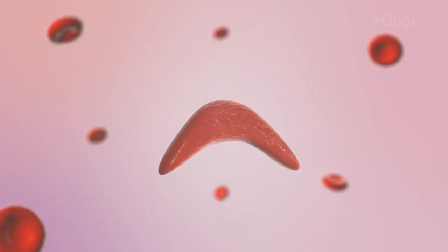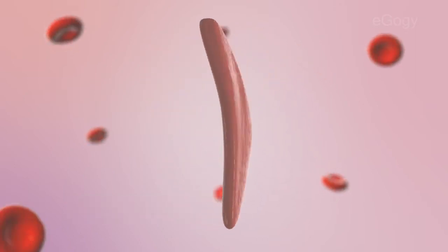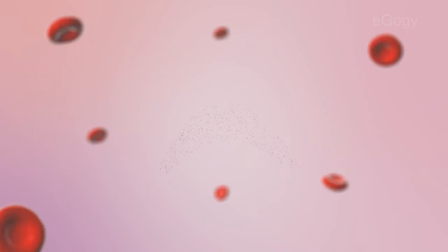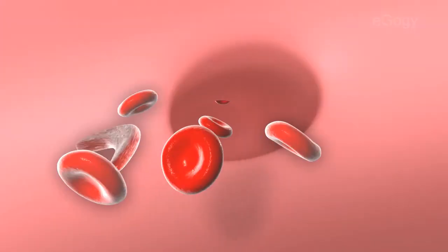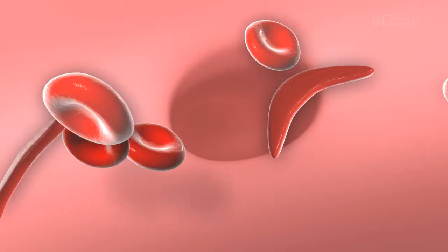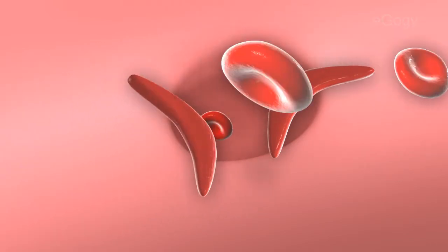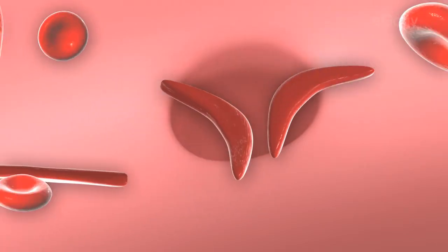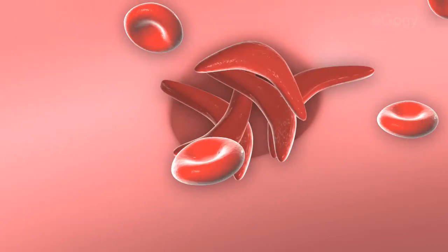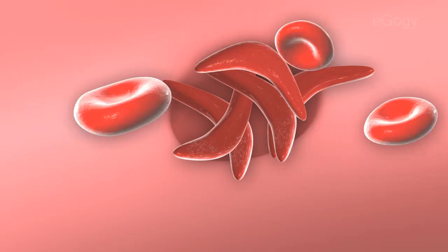The sickle-shaped red blood cells break apart easily. These irregularly shaped cells can get stuck in small blood vessels, which can slow or block blood flow and oxygen to parts of the body.